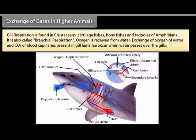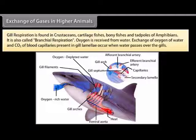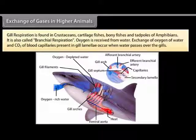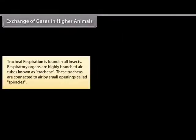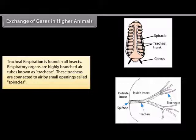Gill respiration, also called branchial respiration, is found in crustaceans, cartilaginous fishes, bony fishes, and tadpoles of amphibians. Oxygen is received from water, and exchange of oxygen from water and CO2 from blood capillaries in the gill lamella occurs when water passes through the gills. Tracheal respiration is found in all insects. The respiratory organs are highly branched air tubes known as trachea, which are connected to the air by small openings called spiracles.